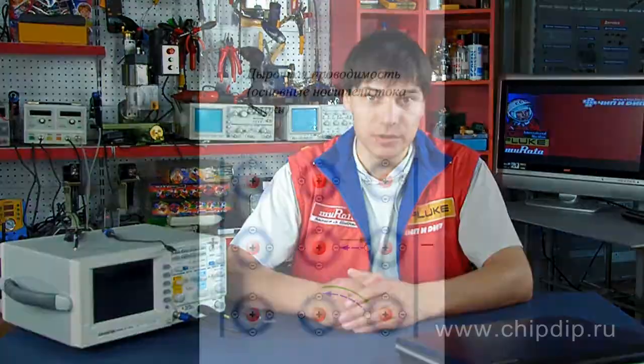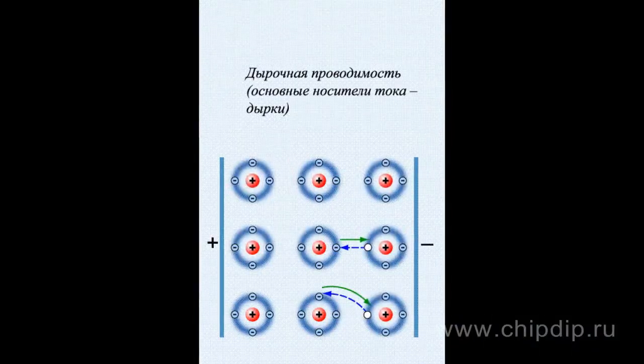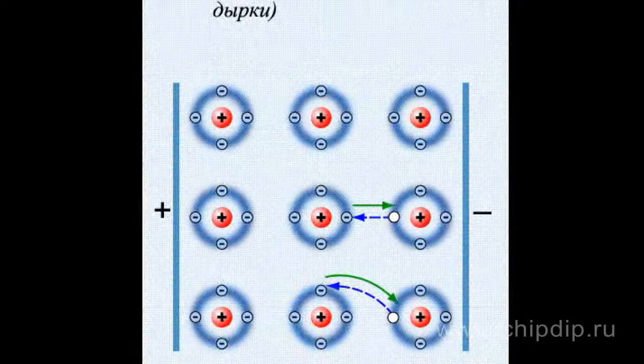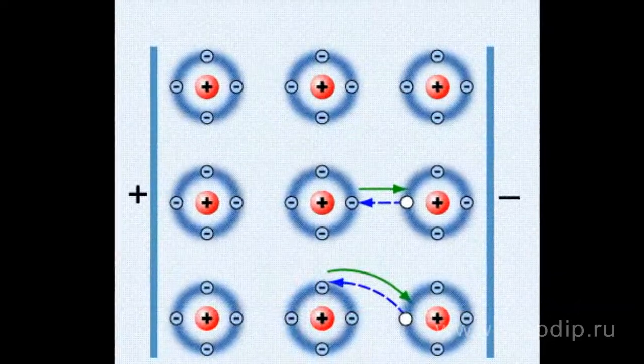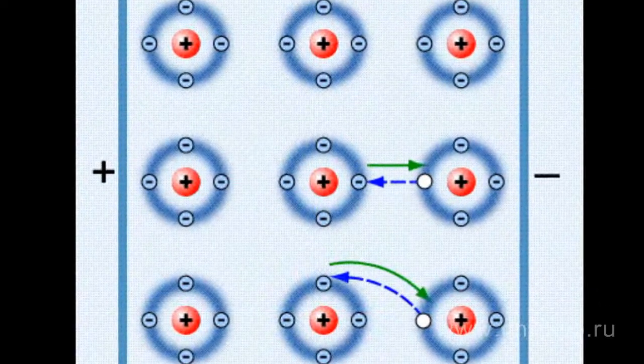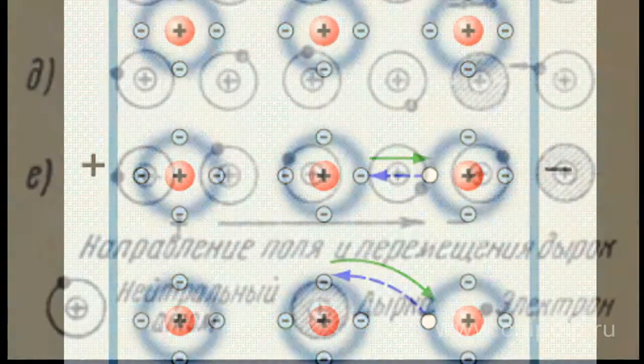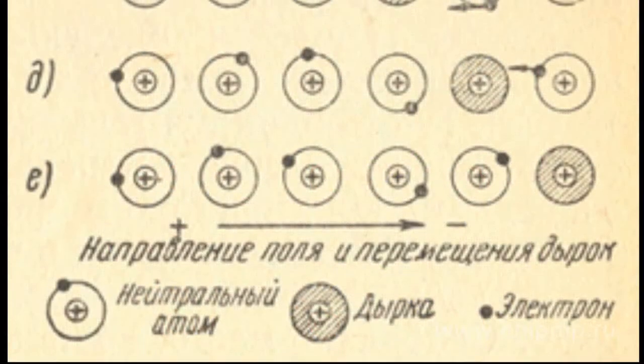But not only the electron current is possible in semiconductors. An atom that has lost an electron becomes a positive ion. This positive ion under an electric field attracts electrons from the nearby normal atom, thus turning it into a positive ion. This newly formed ion in its turn borrows the missing electron from the next atom, and so on.